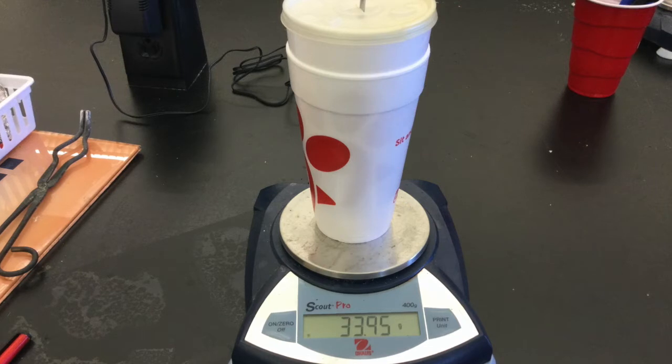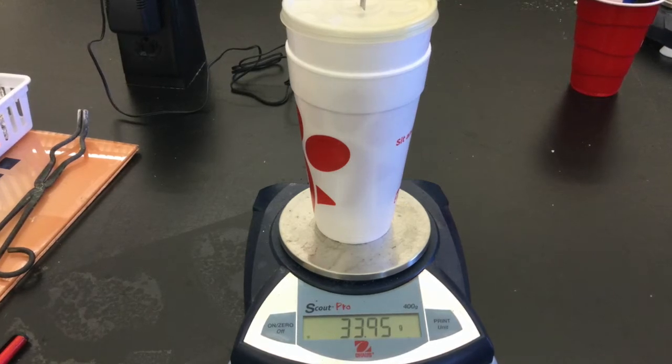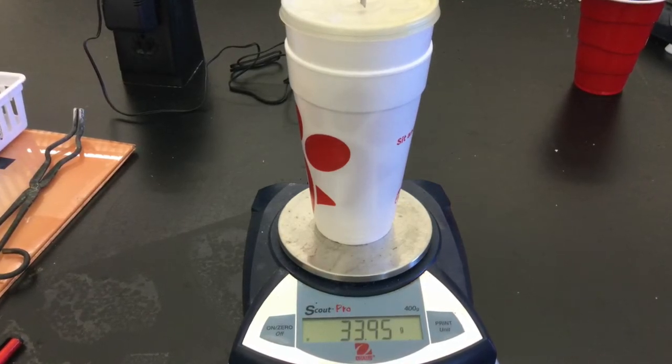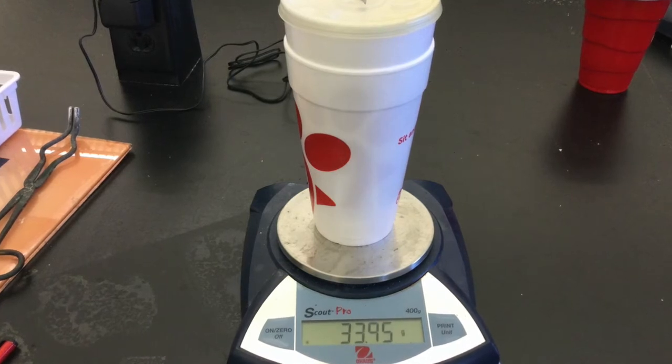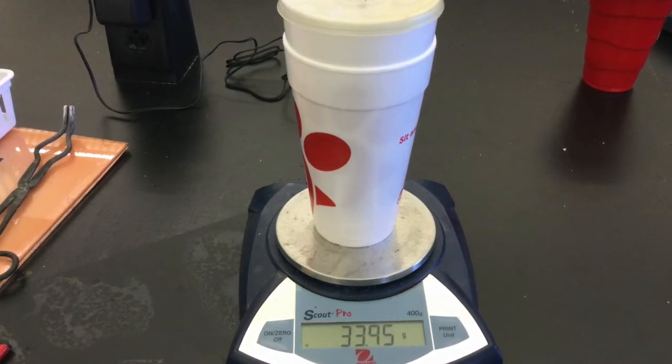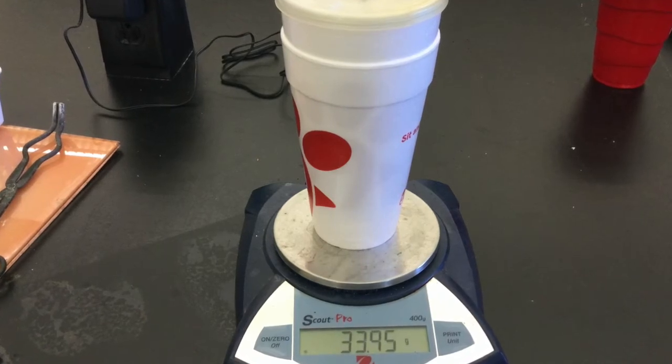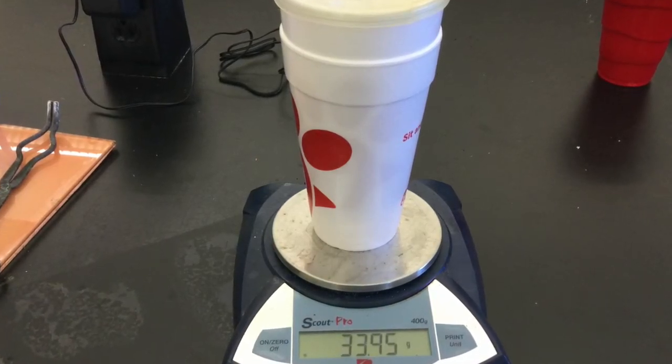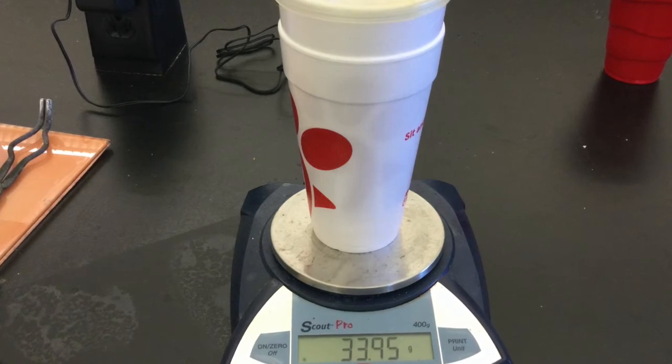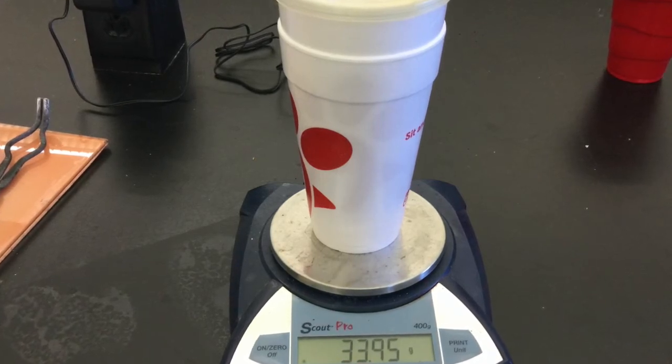Throughout the experiment, you will be using the difference in mass between the calorimeter when full and the calorimeter empty to determine the mass of the solutions, so you need to make sure you have the mass of the calorimeter at the beginning. Be sure to include the mass of the thermometer in the mass of the calorimeter so that you can include this each time you do the measurement later.